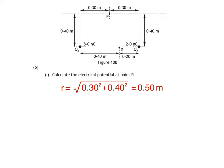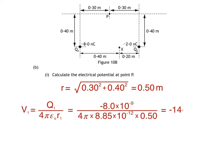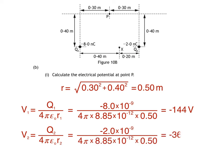Again, we find the electrical potential, this time at P, due to charge Q1, then the potential at P due to charge Q2, then add the two values. So the electrical potential at P due to charge 1 is equal to this, which works out as negative 144 volts. The electrical potential at P due to charge Q2 is equal to this, which is negative 36 volts.